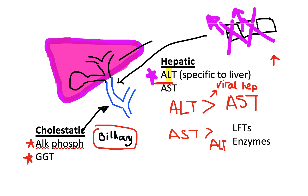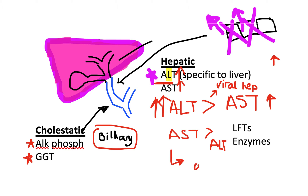However, if AST is raised more than ALT — so in both cases both enzymes are raised, but ALT might be at 100 while AST is only 40 or 50 — then if AST is raised more than ALT, this is often a sign of alcoholic underlying pathology, which may include alcoholic hepatitis.